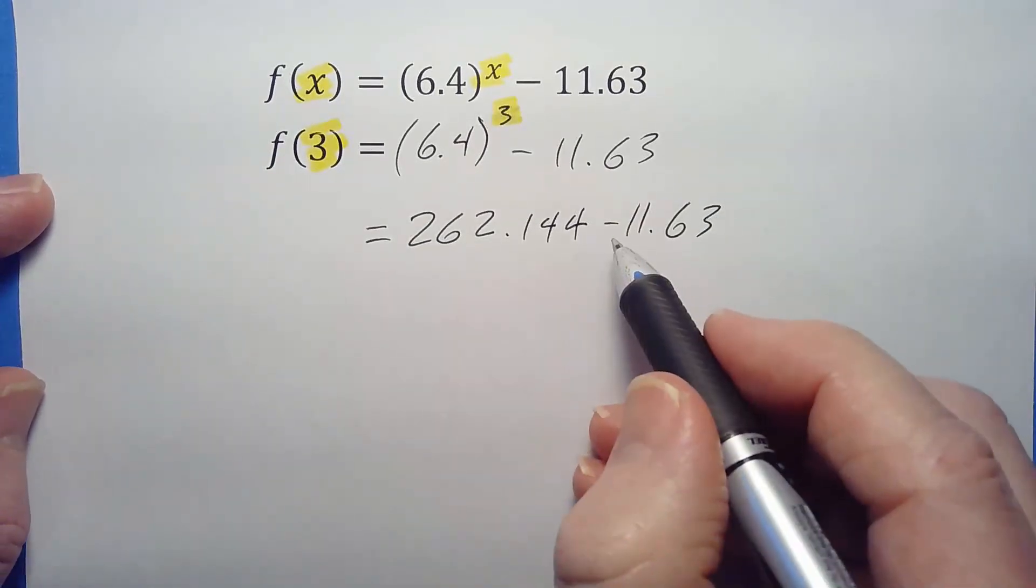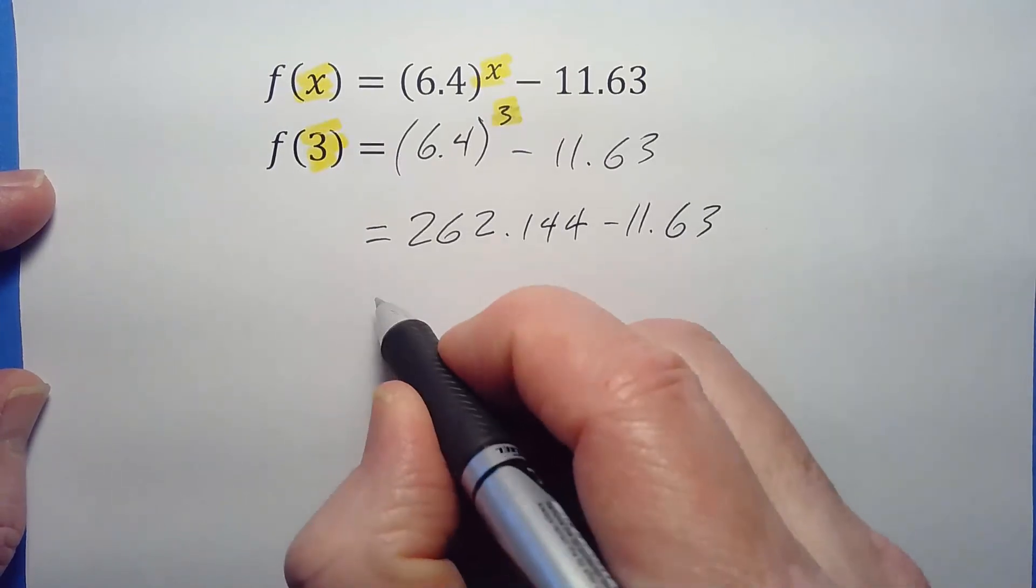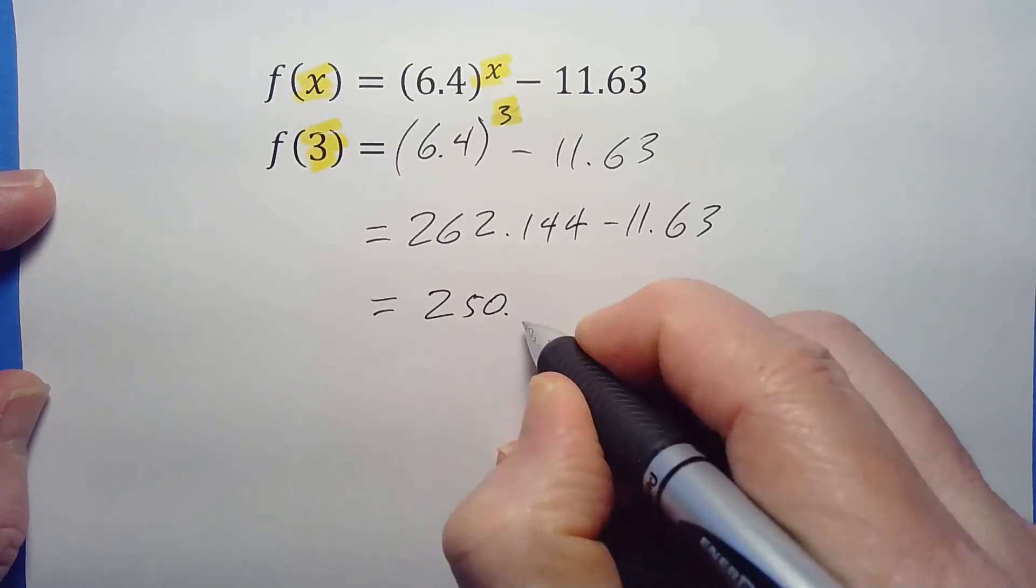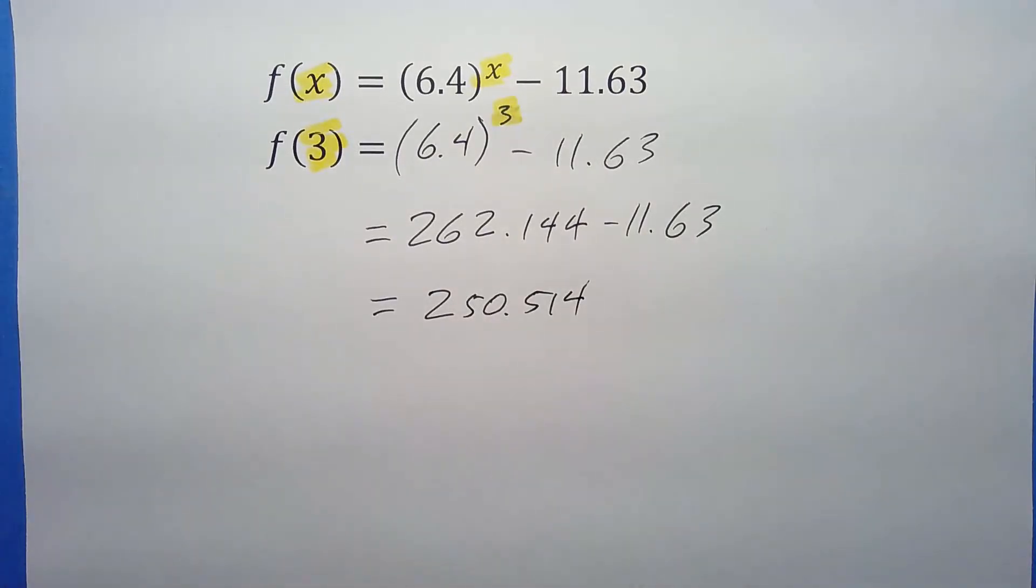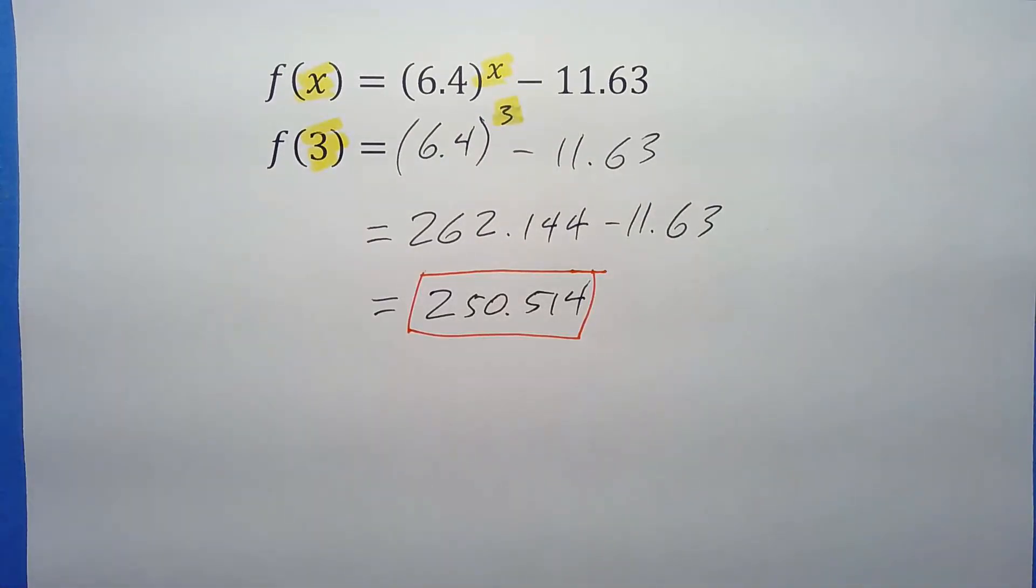I know there's a lot going on, but just be careful. Plug it in, write down each step, and you'll get this just fine. You eventually get 250.514. Put a box around it. Got ourselves an answer, and there you go.